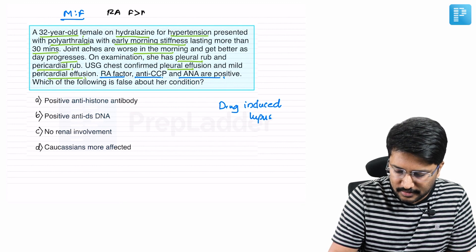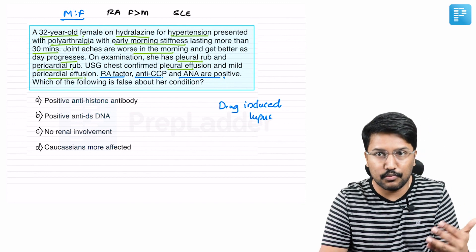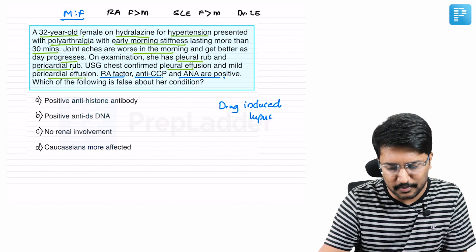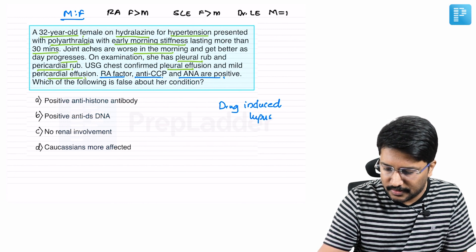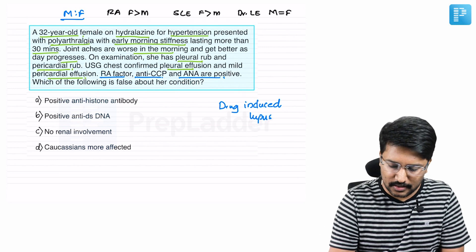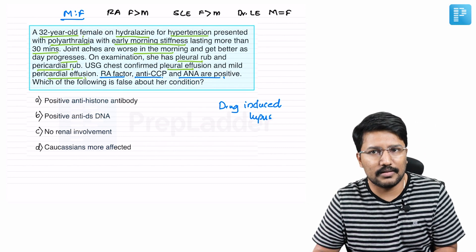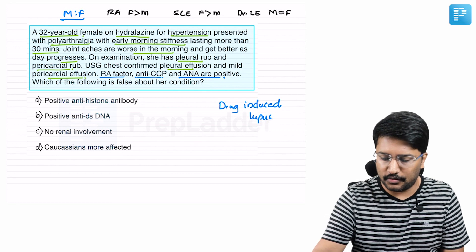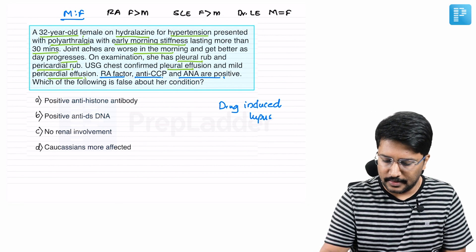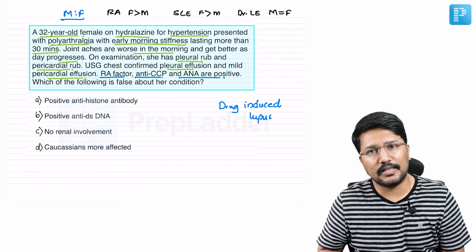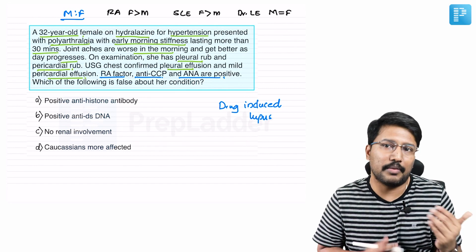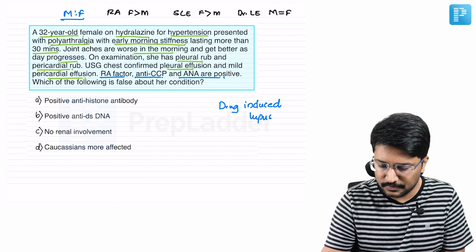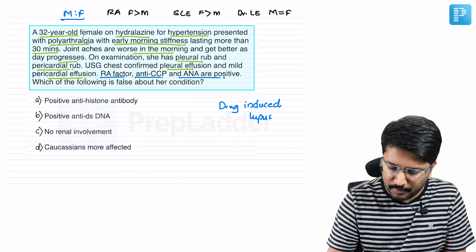In rheumatoid arthritis, females are more affected than males. In SLE, the classic ratio is 9:1 female to male. But in drug-induced lupus erythematosus, males are equally affected as females. So if the question had mentioned a male patient, that would point toward drug-induced lupus from the start. The second clue is hydralazine — it is a well-known drug implicated in the pathogenesis of drug-induced lupus.